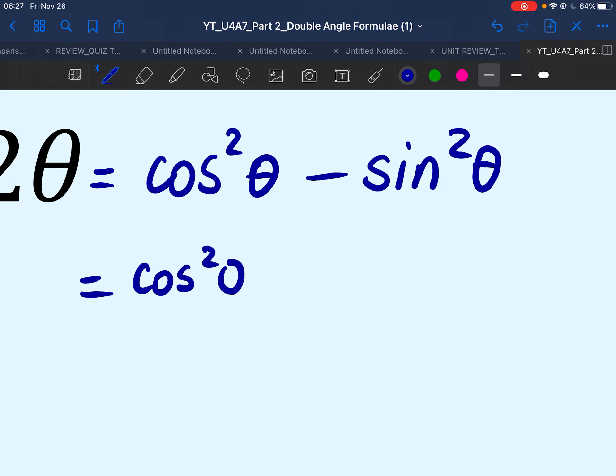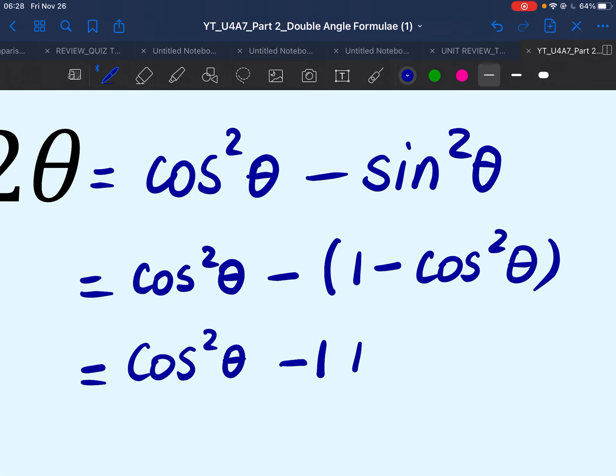So cos square theta is what we already had, minus 1 minus cos square theta. We have to remember to keep this expression in brackets because we are subtracting a binomial. So a subtraction will alter the signs of the terms. So this would equal cos square theta minus 1 plus cos square theta.